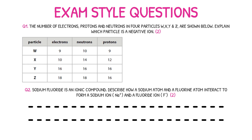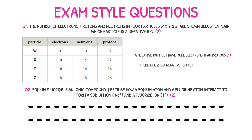Question 1 asks for you to explain which of the particles below is a negative ion. Note that this is a two mark question, meaning you must provide an explanation to support your choice. Your first marking point is for stating that a negative ion would have more electrons than it would protons. Your second marking point is for correctly identifying that the negative particle in this table would be particle Z.